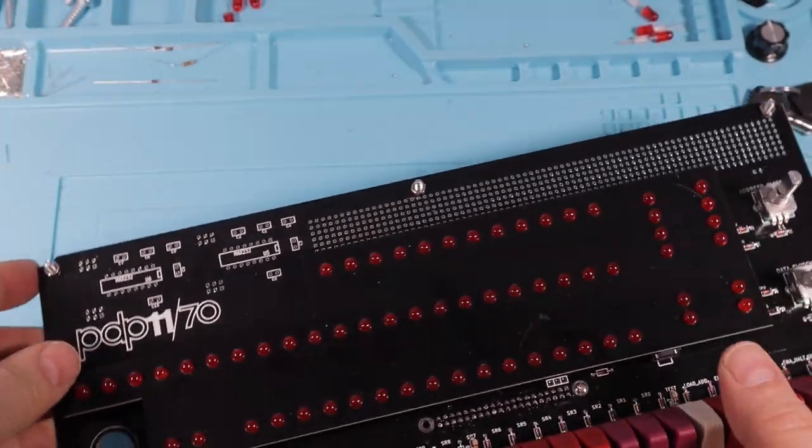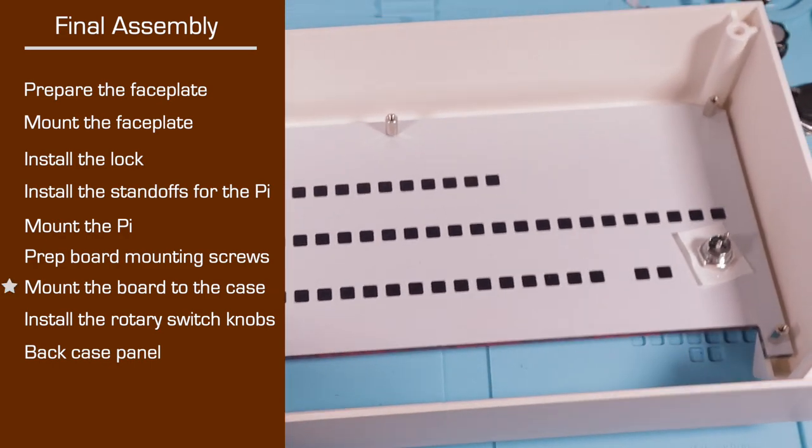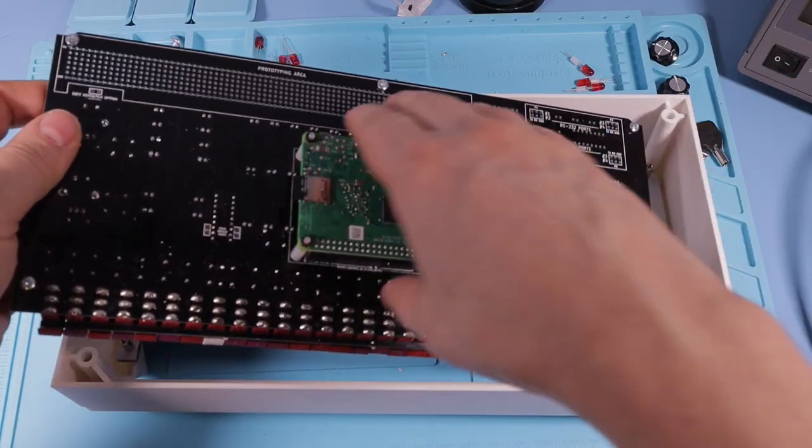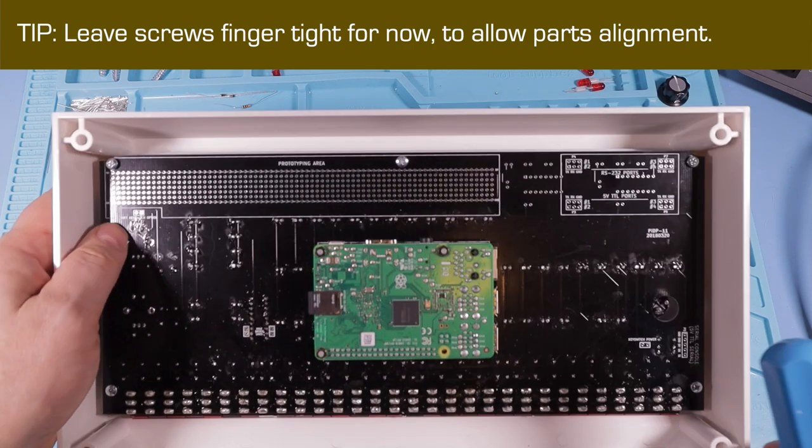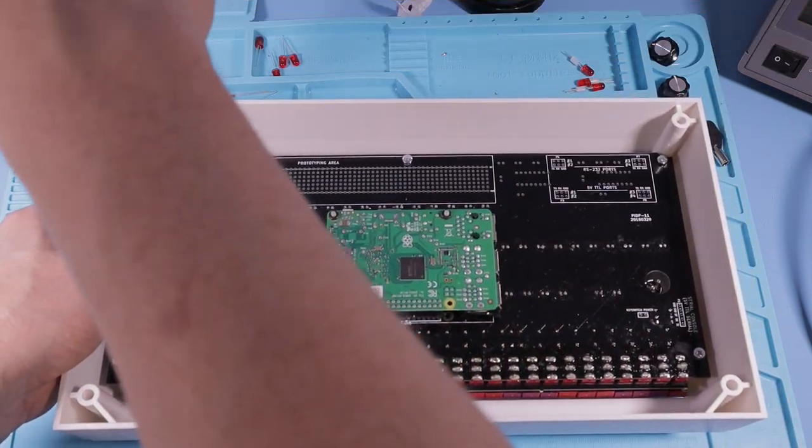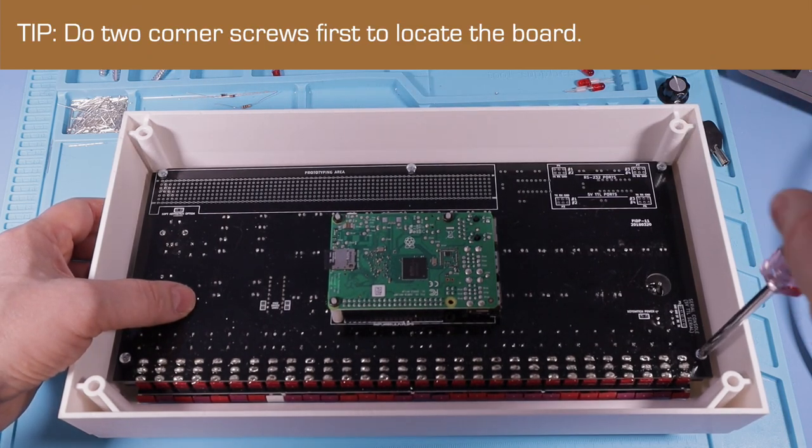We're nearly at the end now. Grab your case shell, put it down on the bench. Now gently lower the board assembly into it. You're pretty safe holding it by the pie. Try to make sure you're lining up the screws with the threads in the case. Now try tightening just one down until it about bites. You want to leave it loose enough to adjust in a minute. Do a second corner so that now you've located the whole thing. Then you can go around all the other screws.